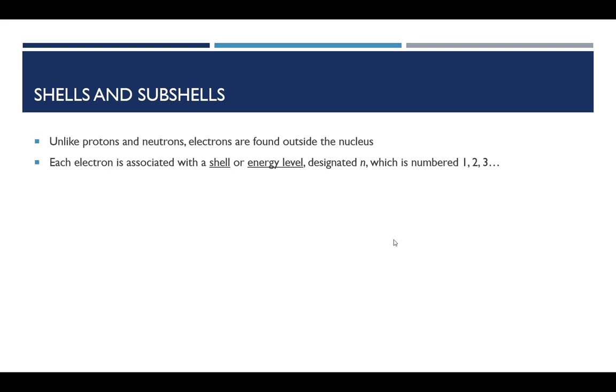We designate those shells with a letter N, which can be a number 1, 2, 3, any positive integer. Those numbers tell us something useful about the likelihood of finding an electron near the nucleus. The lower that number is, the more likely you are to find electrons near the nucleus at some point in time. So low numbers like 1, the electron tends to be very close to the nucleus most of the time, whereas if the energy level number is 8, then that electron tends to spend its time far away from the nucleus.